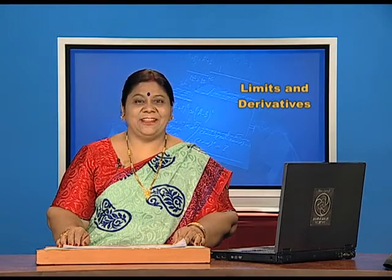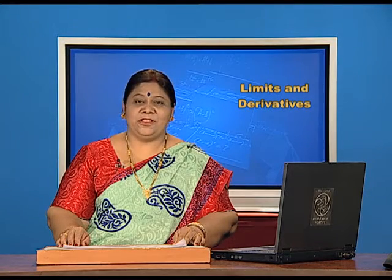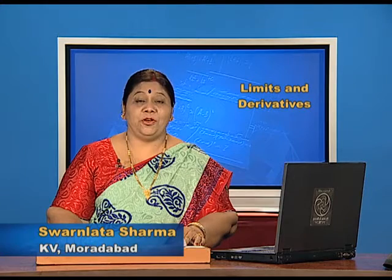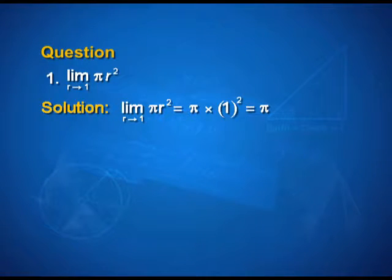Hello students. To begin with, let us see the solutions of the problems I gave you for the home assignment. Question number 1: limit pi r square as r tends to 1. Look at the solution. We have limit pi r square as r tends to 1 is equal to pi into 1 square, that is equal to pi.